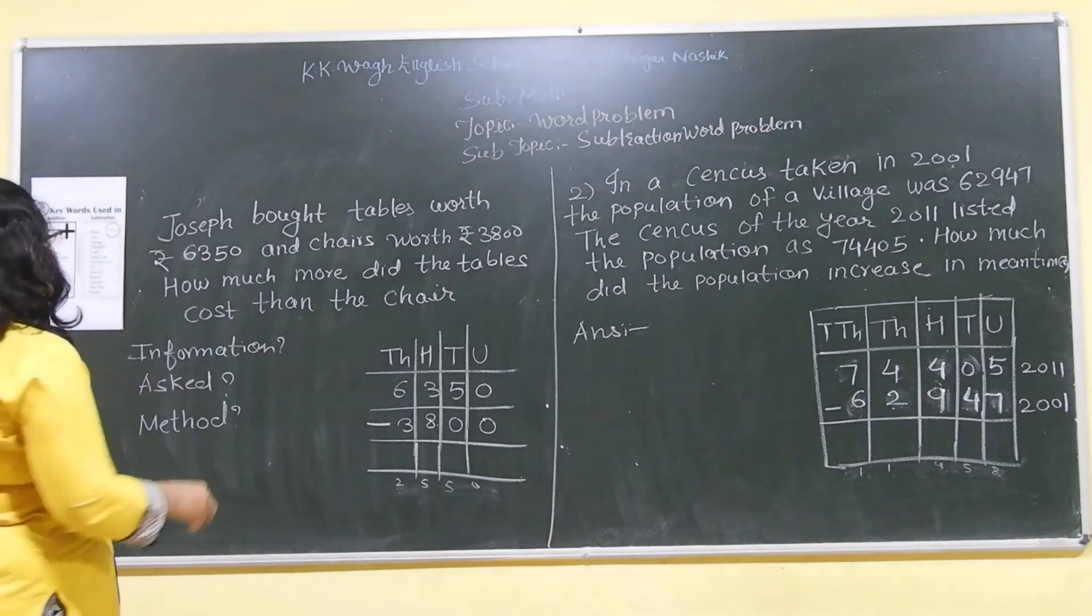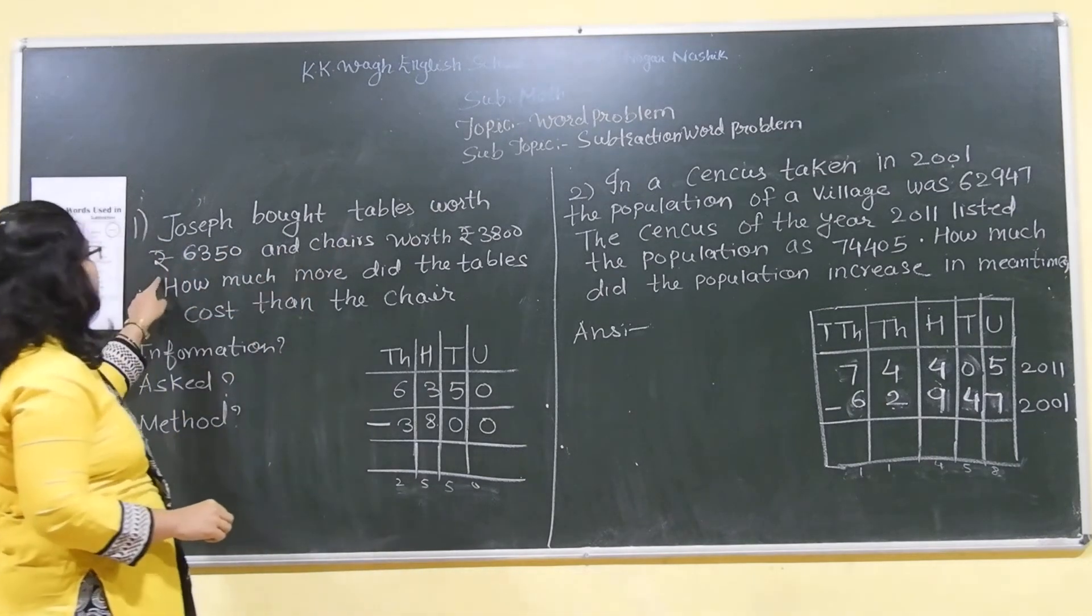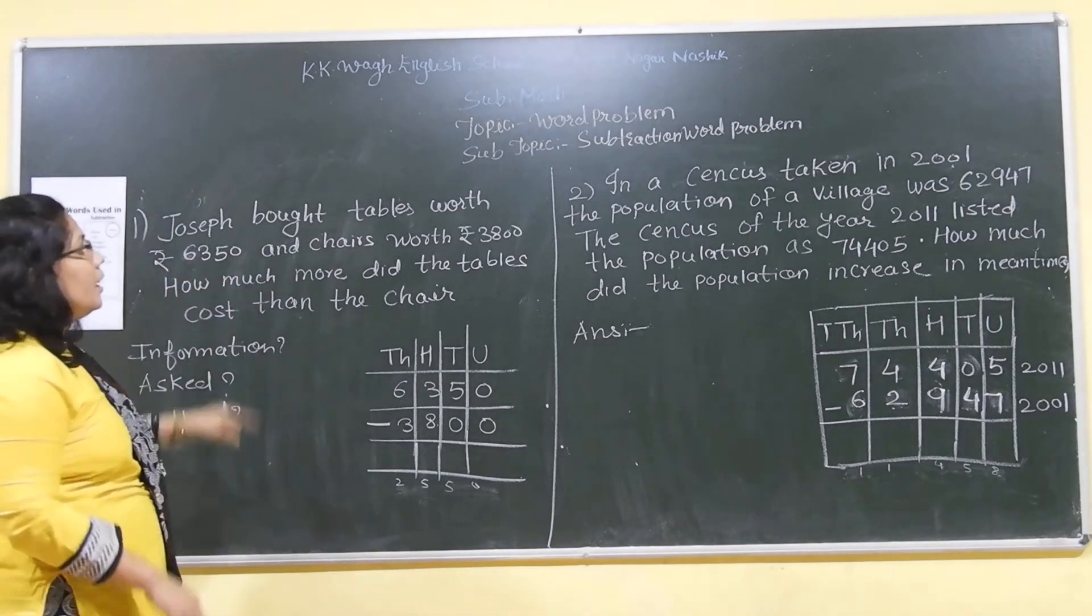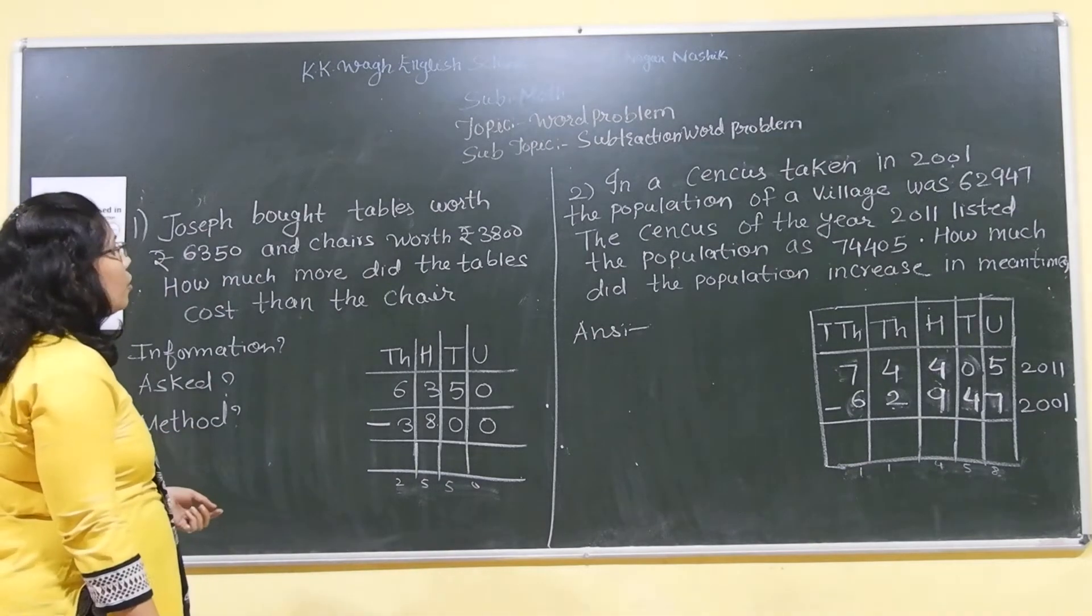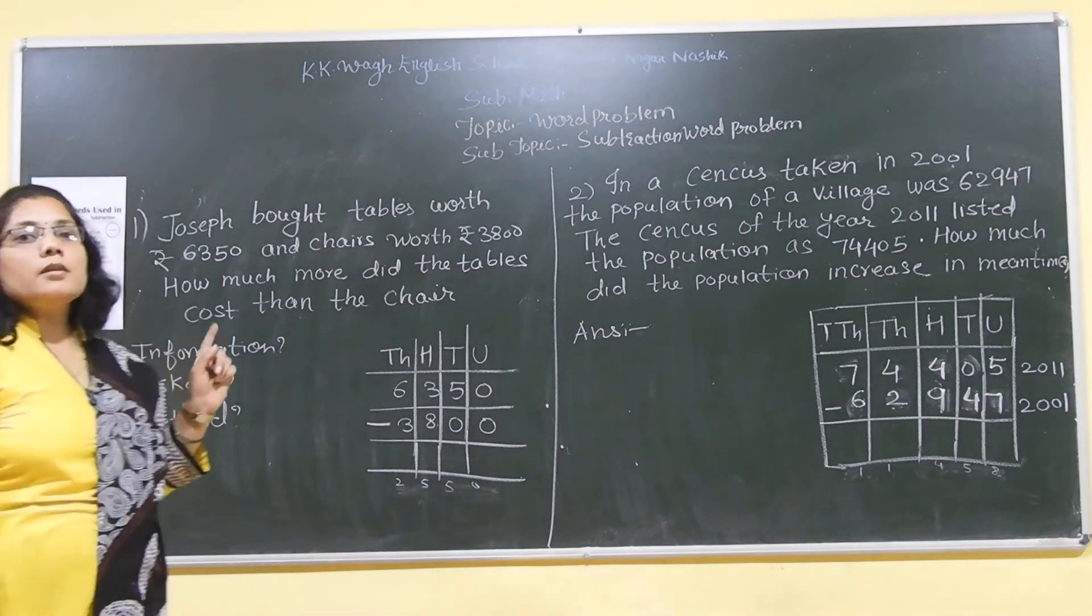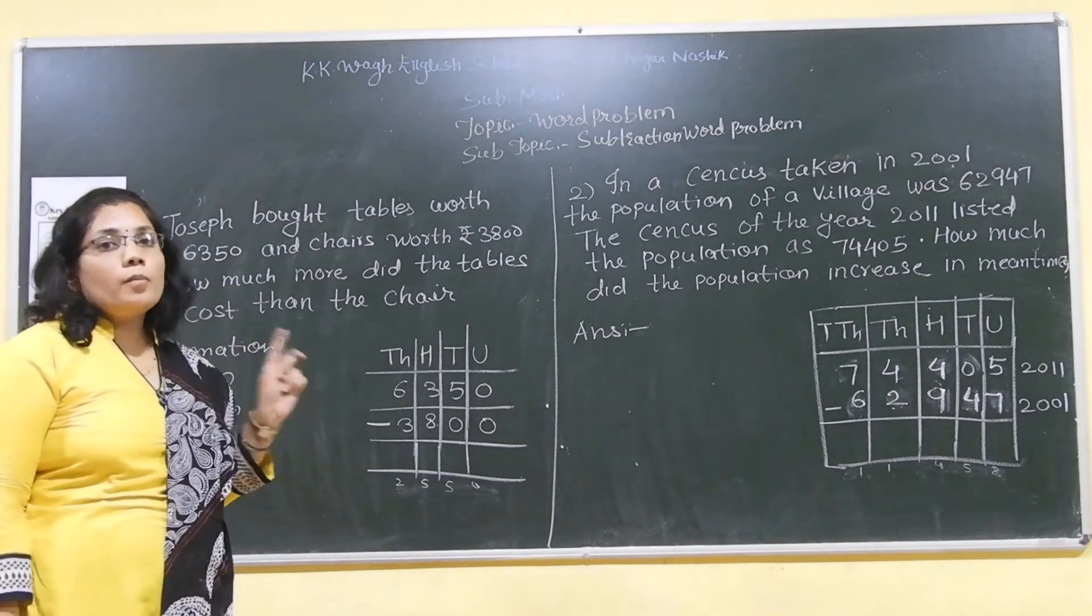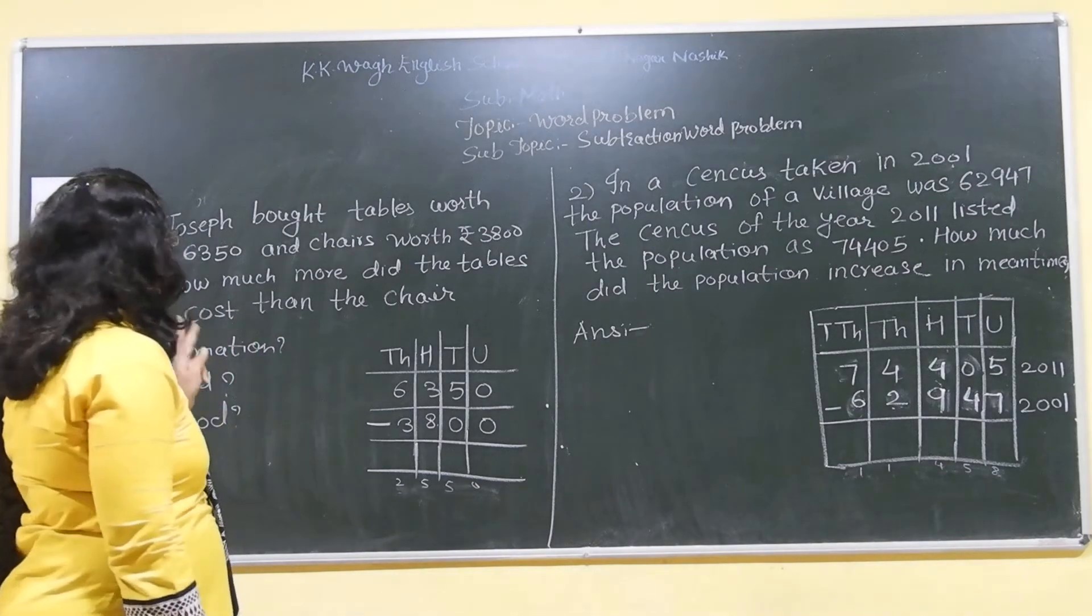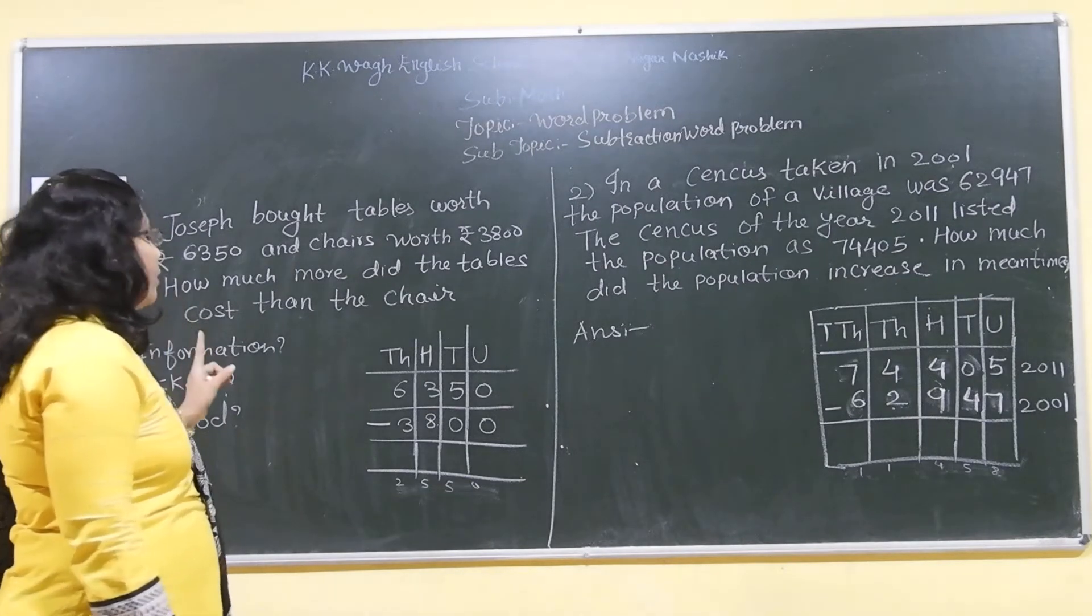So children, let us see the first sum. Joseph bought tables worth rupees 6350 and chairs for rupees 3800. How much more did the tables cost than the chair? First of all, I told you in the last period also that we have to read the word problem two times properly. Then we have to find out what information is given.